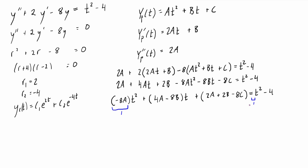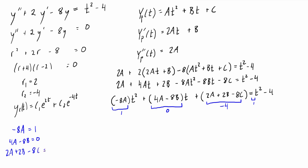Looking at the right hand side, there are no t terms by themselves, so the coefficient of t on the left must equal zero: 4A − 8B = 0. The constant on the right hand side is negative 4, so 2A + 2B − 8C must equal −4. This gives us our system of three equations: −8A = 1, 4A − 8B = 0, and 2A + 2B − 8C = −4.